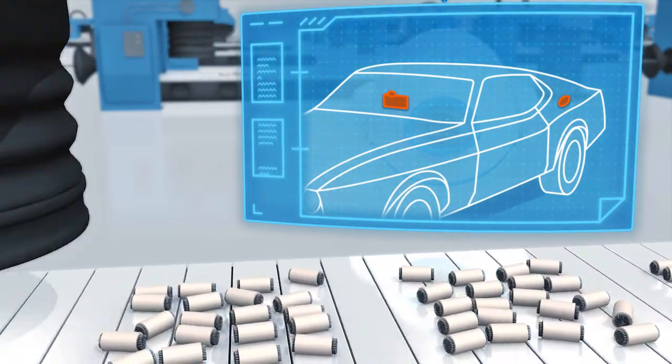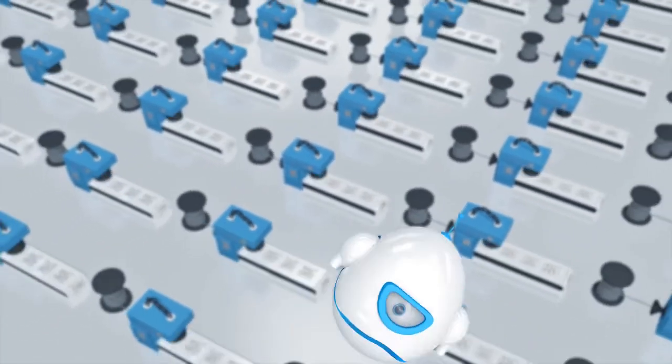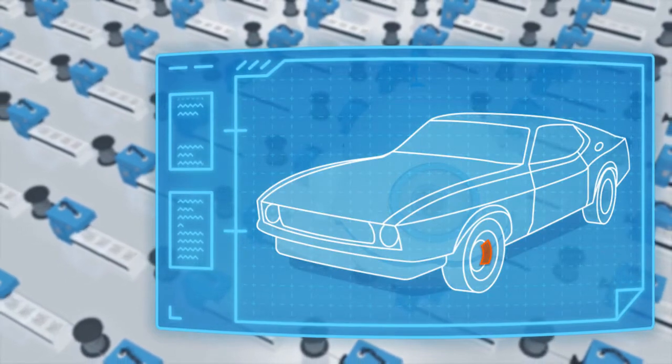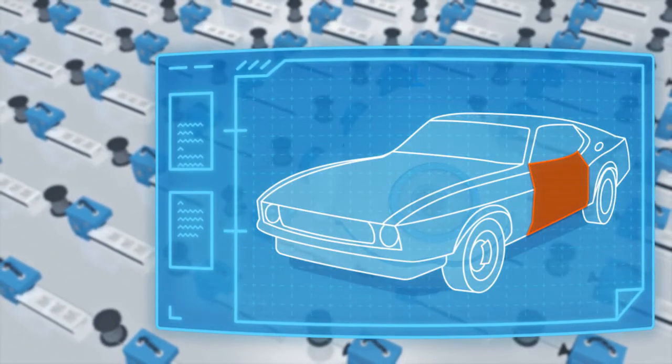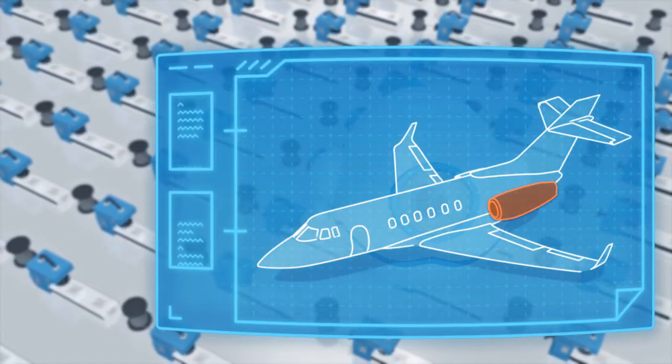But there is more! Bekaert metal fibers are also non-flammable, shock-resistant, and soundproof, making them suitable for many other applications such as brake pads, composite reinforcements, SCR tank and tube heating, burner materials, and acoustic panels.